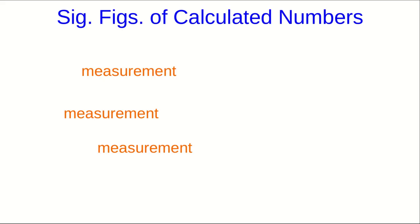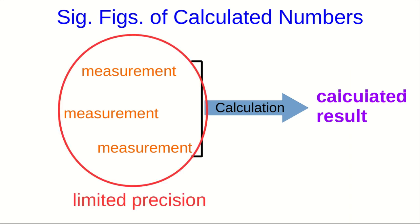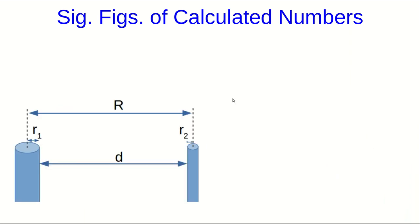Quite often we have some set of measurements and we need to use them to do some sort of calculation to obtain a calculated result. An issue that arises is that those measurements have limited precision. That means any number we calculate from them will also have limited precision and we need to know how to determine what the precision of that calculated result is. Let me illustrate this with an example.